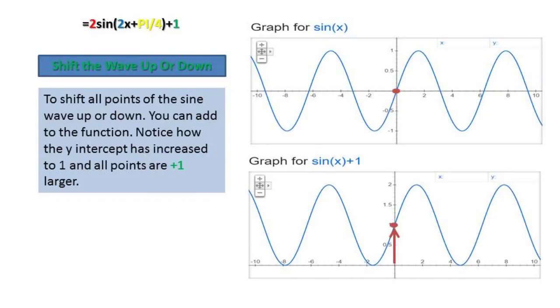We're going to start out by looking at what that green +1 at the end of the function does. Basically what that +1 does is it shifts all points along the sine wave up 1. So now if you want to move all the points down, you would just subtract instead of add to the end of the function.